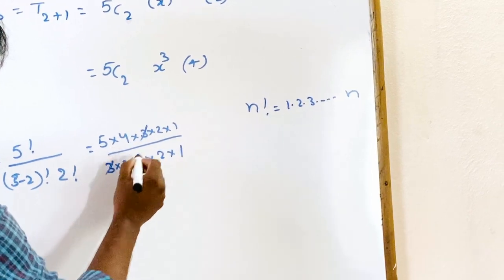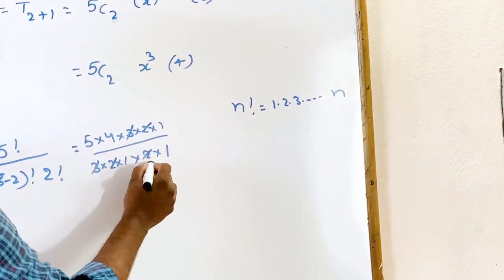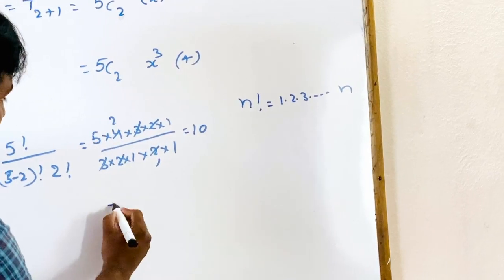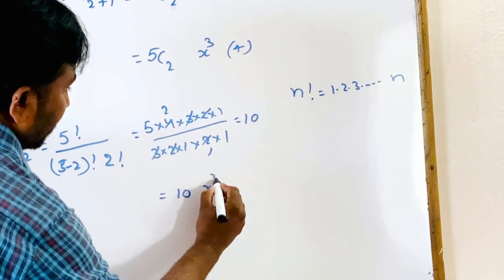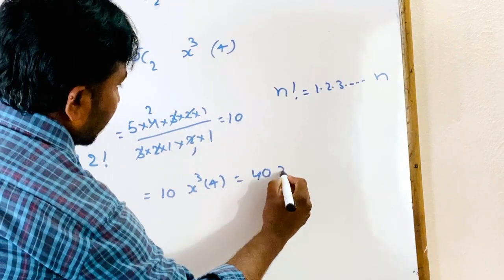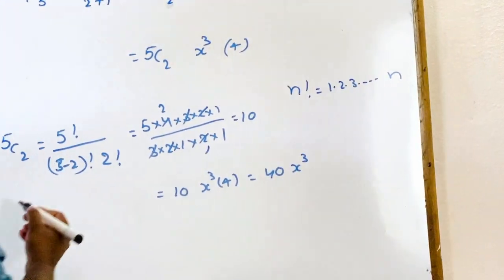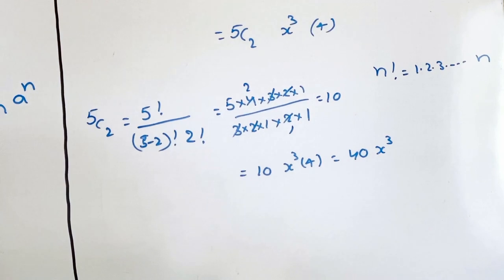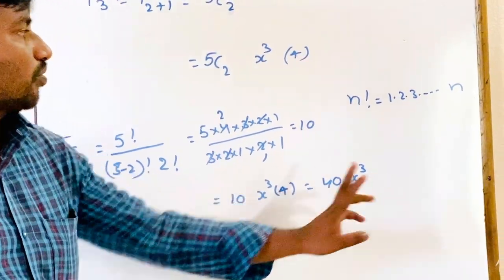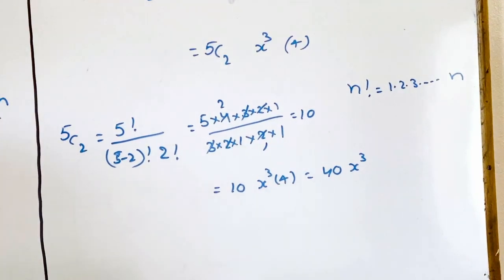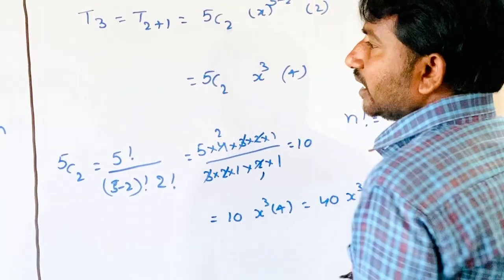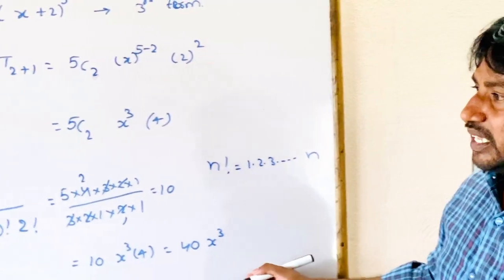After cancellation, that value becomes 10. So the result is 10 into x cube into 4, which is equal to 40x cube. In the expansion of (x + 2y) whole power 5, the third term is 40x cube. This is the expansion of the binomial theorem.